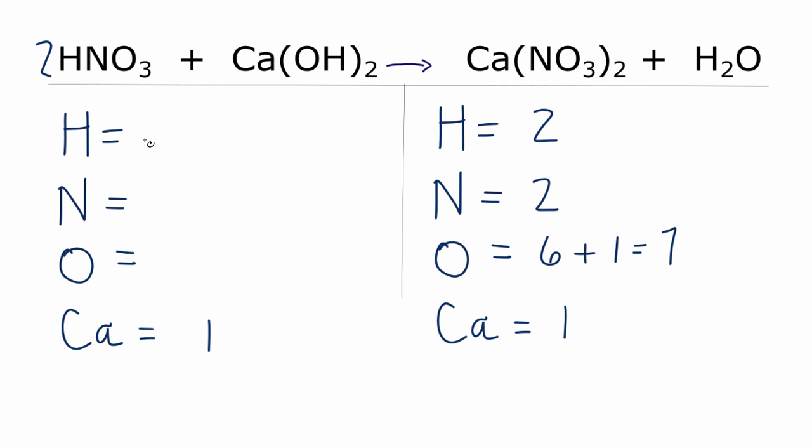So I have the one times the two, two plus, I have the two times the one here. I have two of them. That gives me four hydrogens. One times two, two nitrogens. And then oxygens, two times three is six, plus I have the two times the one here, two. That equals eight, and calcium stays the same.